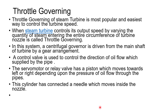Throttle governing of the steam turbine is the most popular and easiest way to control turbine speed. It controls output speed by varying the quantity of steam entering into the entire turbine. In this system, a centrifugal governor is driven by the main shaft of the turbine by a gear arrangement. A control valve controls the direction of oil flow, and the servo motor or relay valve has a piston which moves left or right depending on oil pressure. This cylinder is connected to a needle which moves inside the nozzle.